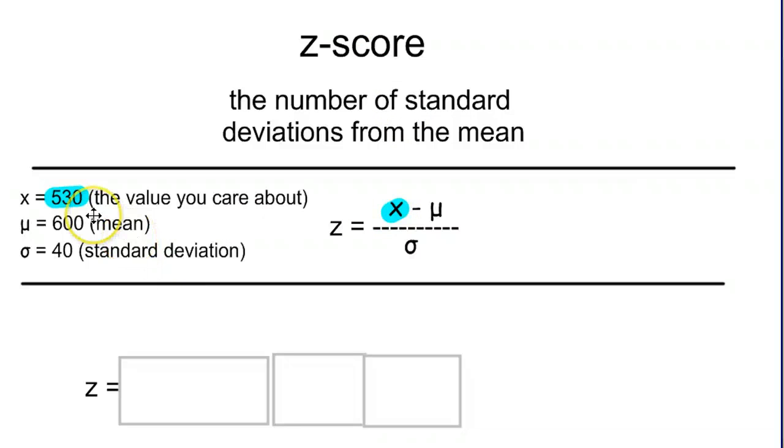Now, 530, if we're just going to do a quick estimate in our head, is below 600. So our z-score is going to be negative. Whenever you have a value that's below the mean, it's always going to be a negative z-score. And we can see that it's definitely more than 40, but not quite 80 below 600, so it's going to be somewhere between negative 1 and negative 2.